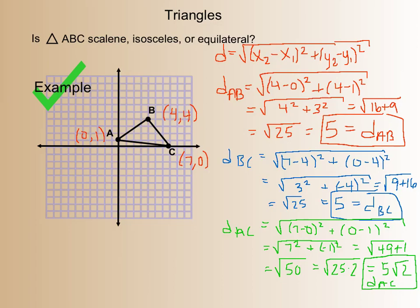Okay, so I found my three lengths. Now, when I look at these, I have distance from A to B is 5. So let's write that in here. This side is 5. I also had that my next distance, B, C, was 5. And my last distance, A, C, was 5 square root 2. So I have two sides which are the same length, which means this is an isosceles triangle.